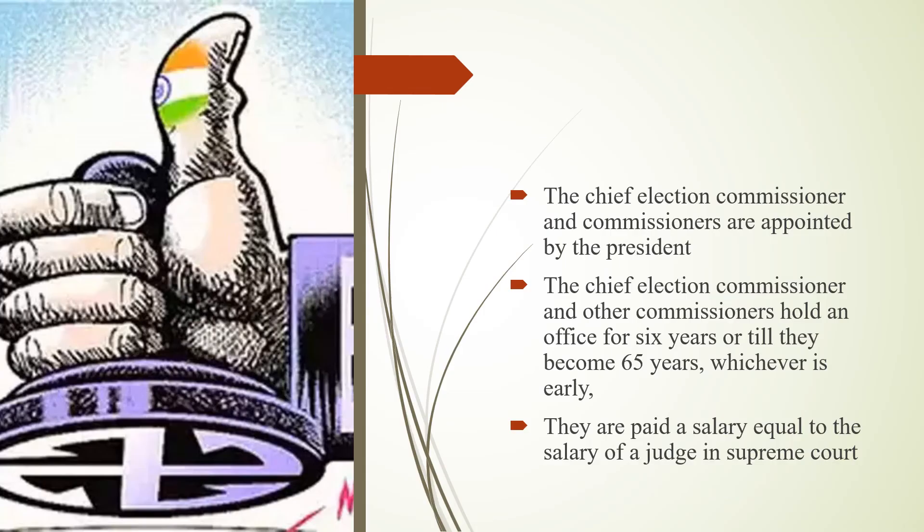The Chief Election Commissioner and the other commissioners are appointed by the President. The Chief Election Commissioner and the other commissioners hold office for six years, or till they reach the age of 65 years, whichever is earlier. They are paid a salary equal to the salary of a judge of the Supreme Court.